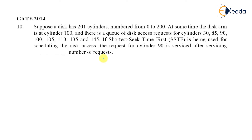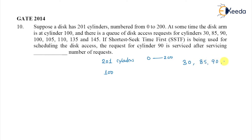The next question: we have a disk with 201 cylinders, numbered 0 to 200. At some time the disk arm is at cylinder 100. There is a queue of disk access requests for cylinders: 30, 85, 90, 100, 105, 110, and 135, and also 145.